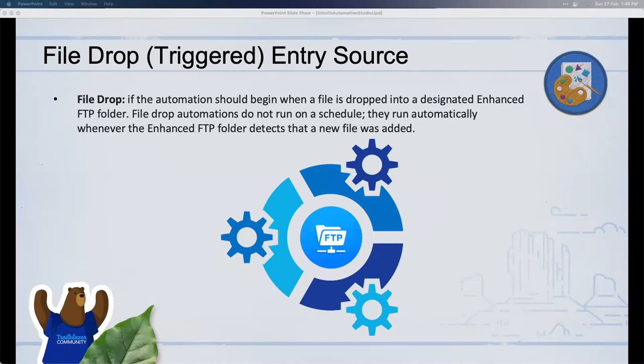The File Drop entry source is very useful especially when you're not sure when the source file will arrive on the FTP. Sometimes you can use Scheduled — if you know a file always arrives by 3 AM, you schedule the job at 4 AM. But sometimes you don't know when the file will arrive, or it may come multiple times a day. In those cases, you want the automation to kick off immediately when the file lands.